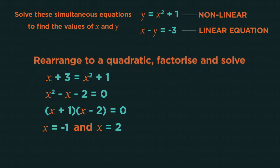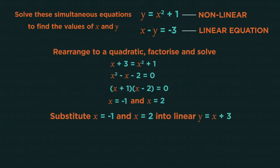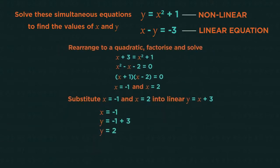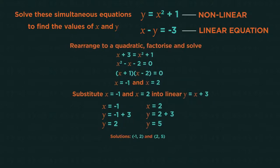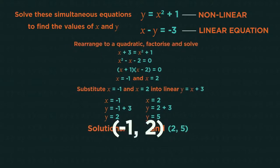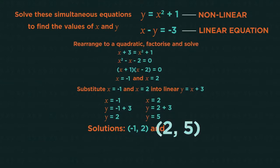Substitute the x values into the linear y equals equation. So when x is -1, y is 2, and when x is 2, y is 5. So the solutions are (-1, 2) and (2, 5).